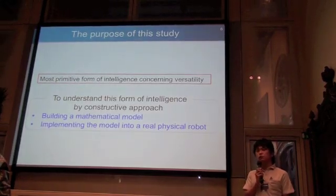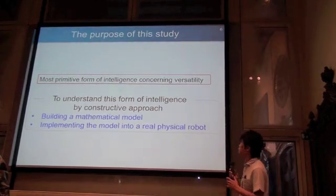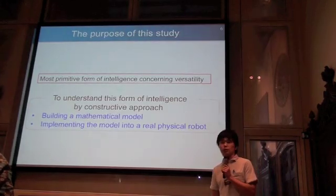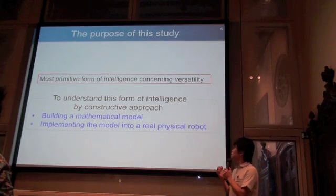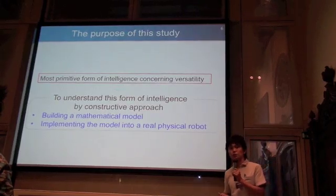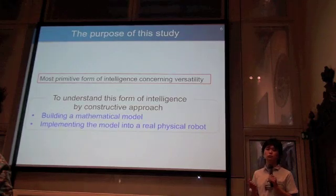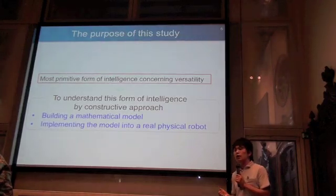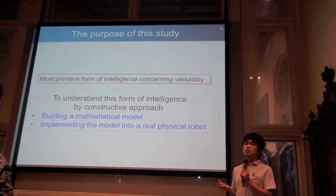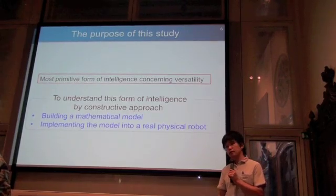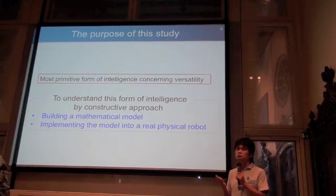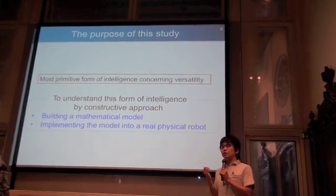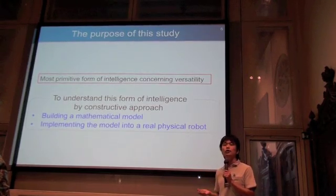Based on these biological findings, we can say that slime mold has the most primitive form of intelligence concerning versatility. So the purpose of this study is to understand this primitive form of intelligence that induces versatile behavior, by a constructive approach. In particular, by building a mathematical model and implementing the model into a real physical robot, we would like to reproduce the most primitive form of intelligence concerning versatility. We believe that without understanding this primitive form of intelligence of slime mold, we cannot understand the intelligence of any higher form of animals.